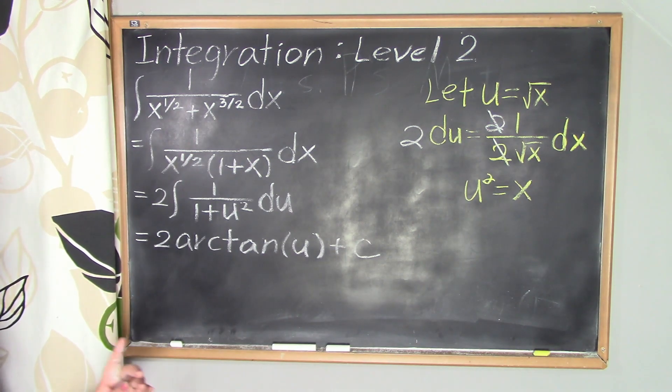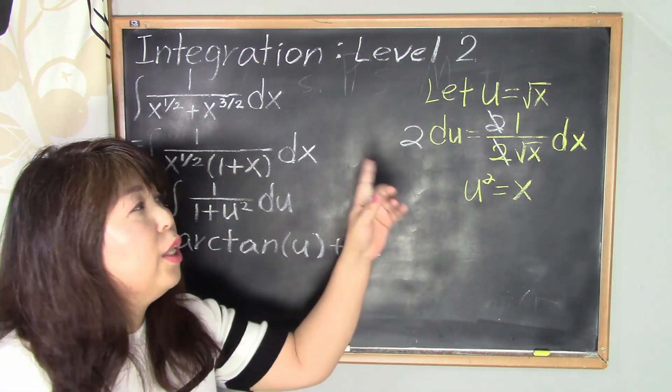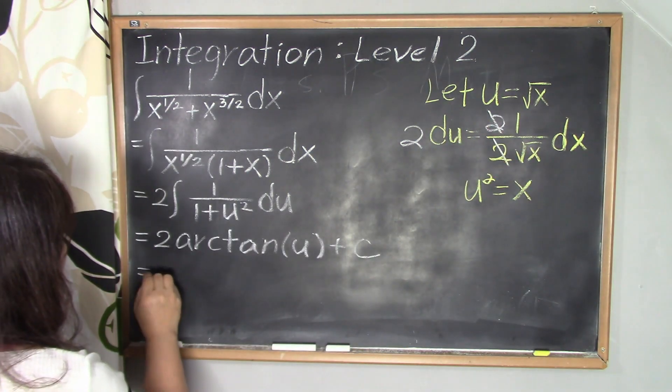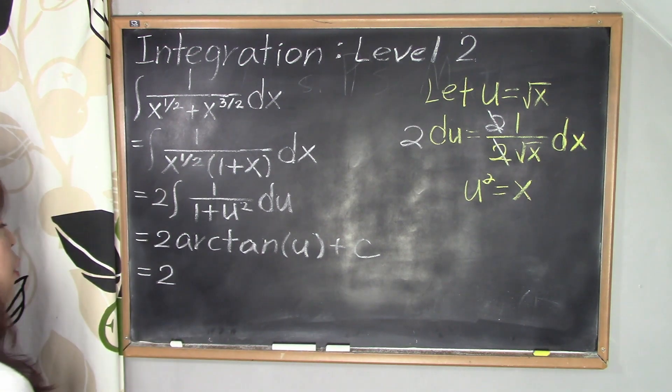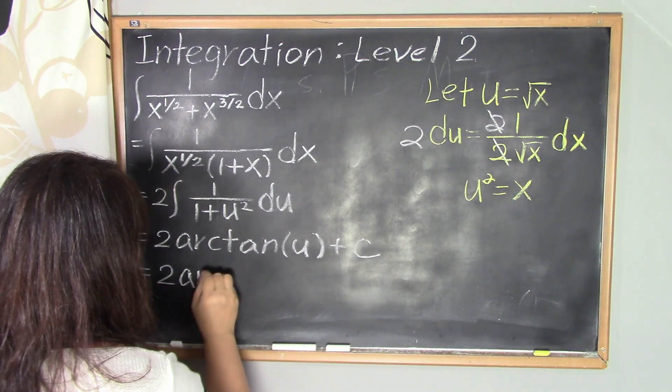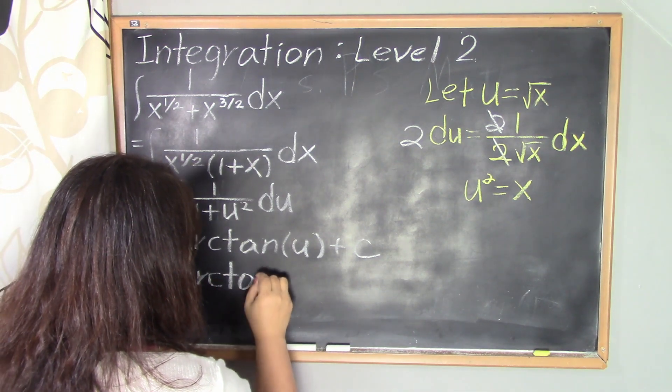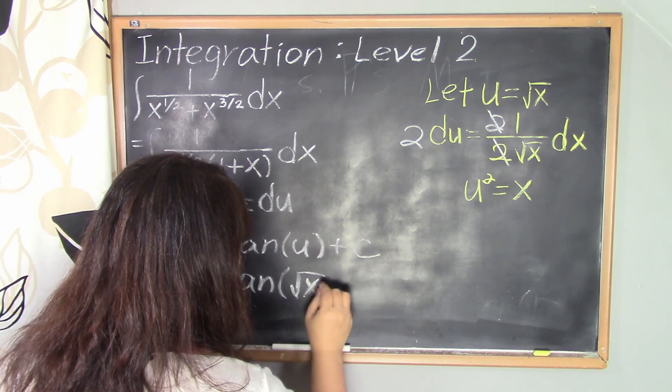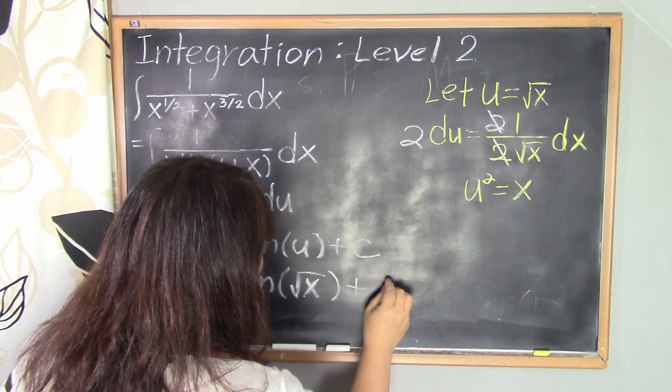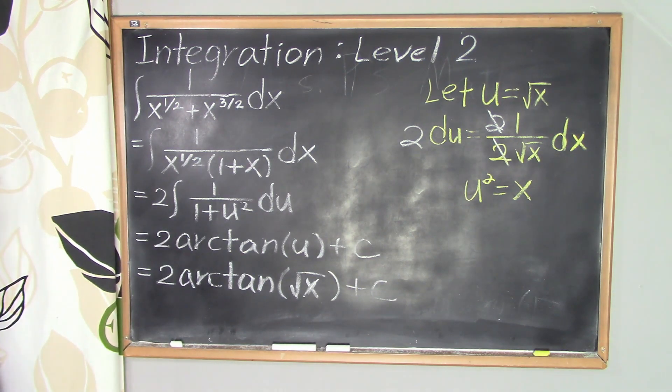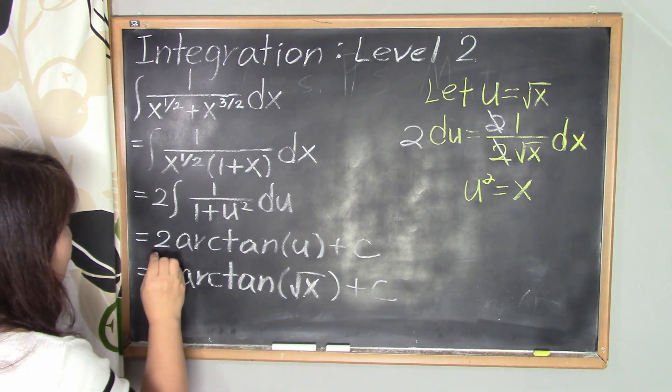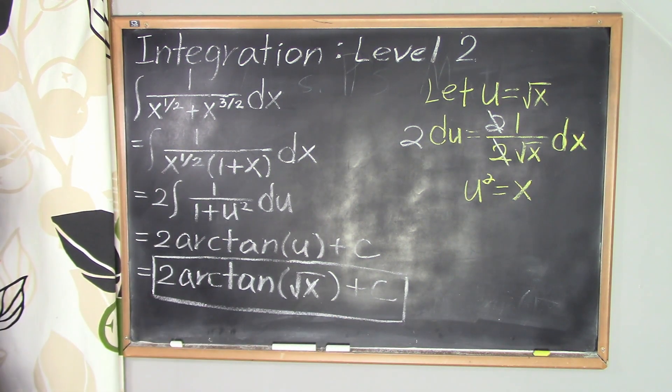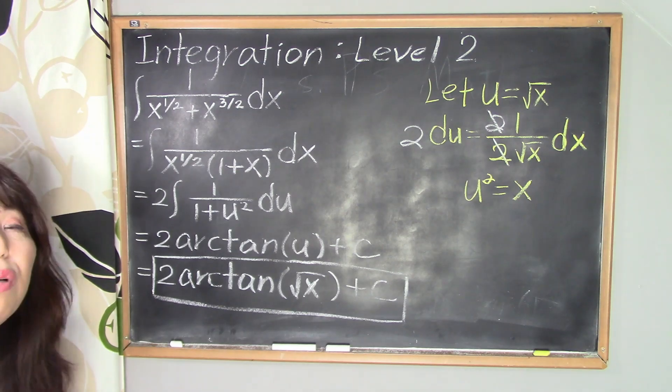And then next step, we're going to go back to x variable. So u equals square root of x. So I'm going to change now. This is equal to 2 times arctangent of square root of x plus c. So this is it. This is the answer.